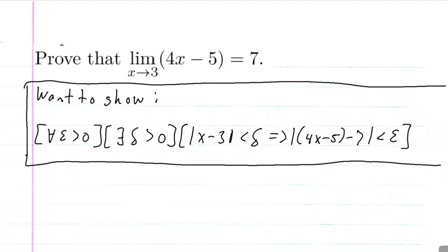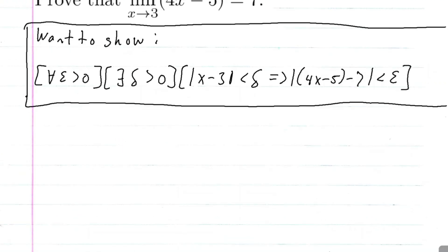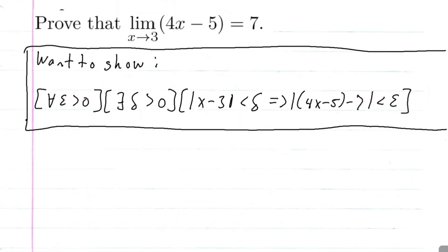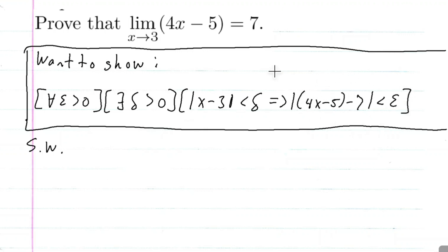Another thing that's not part of the proof that's going to help us is some scratch work, which is typically done in these types of problems to help us figure out that delta. So let's write some scratch work. We're going to start with our conclusion and figure out from the conclusion what our delta can be.